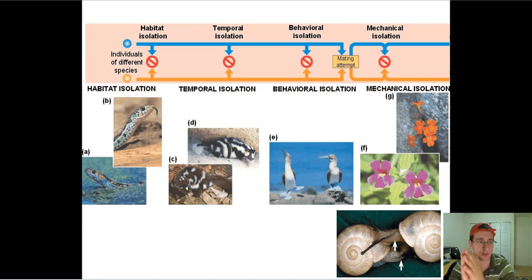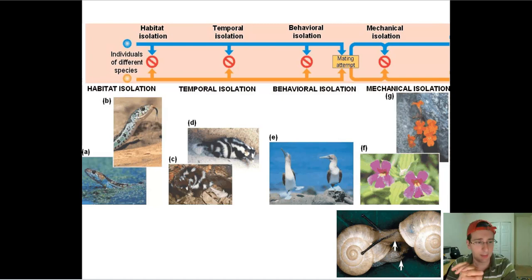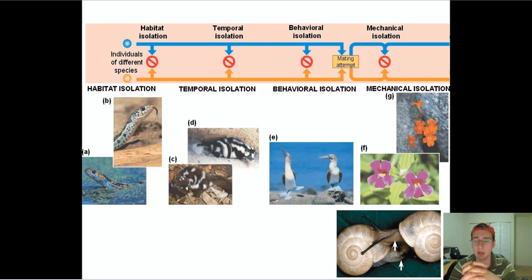For example, you see these two skunks here, which actually breed at completely different seasons of the year. Other animals — some will breed during the day, others during the night, others right in between at dusk or at dawn. So if the animals are breeding at different times, they're not going to be crossing with each other because they will never encounter each other during the breeding season. That means it will cause temporal isolation.